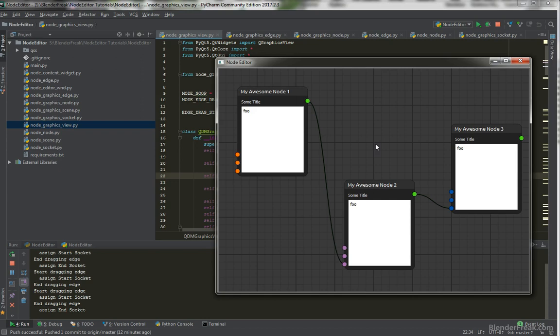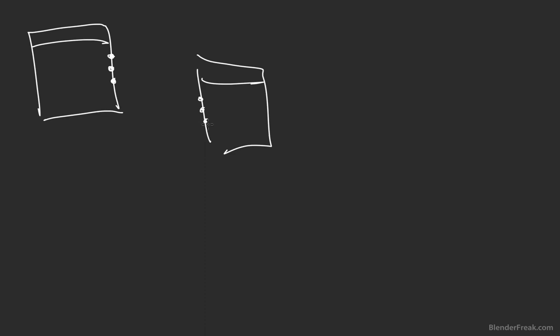Let's spend some time talking about what we are going to implement. If we have a socket on our node and we have another node, the first functionality I want is left mouse button click and drag up to the end socket. I start clicking here and I want to see something like a dashed line which will indicate that I'm actually dragging an edge. Once I release it on a socket, this line will change back to the regular edge which we already know.